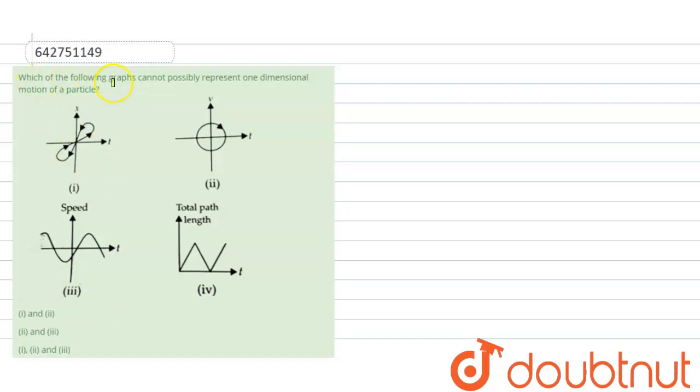Which of the following graphs cannot possibly represent the one-dimensional motion of a particle? One by one, we will explain.